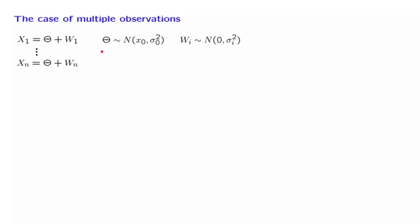The noise terms are also normal random variables with zero mean and a certain variance. And finally, we assume that these basic random variables that define our model are all independent.